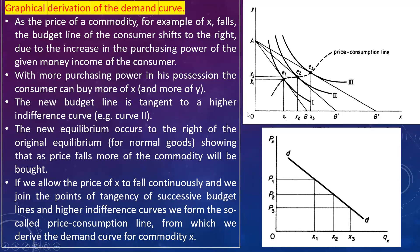If we allow price to fall continuously and join the points of tangency of successive indifference curves and budget lines, we get the price consumption line. The price consumption line is the graph joining the points of tangency or equilibrium of higher indifference curves and budget lines. Through this price consumption line, we can derive the demand for commodity X.